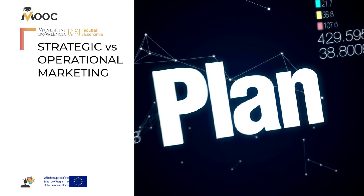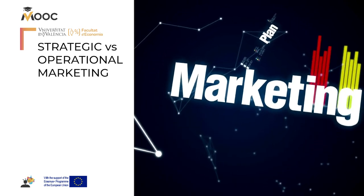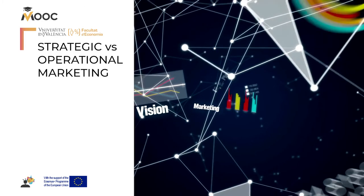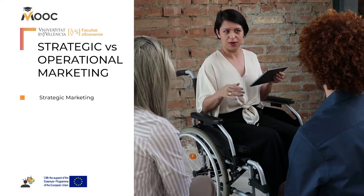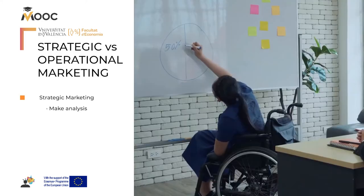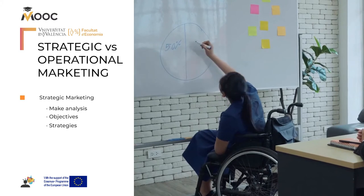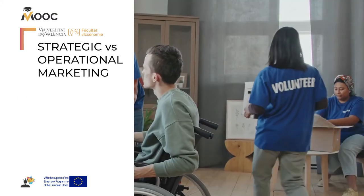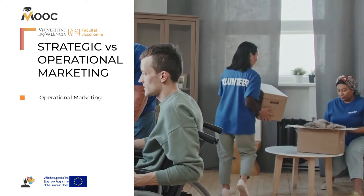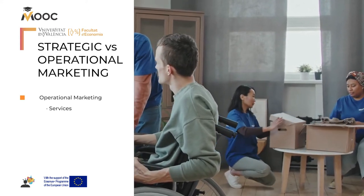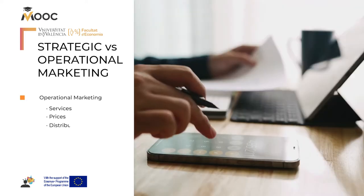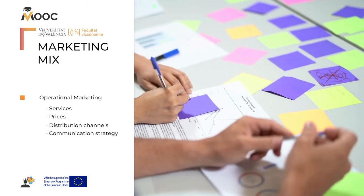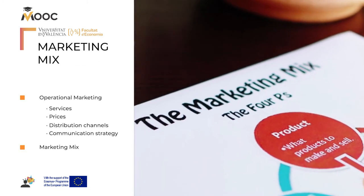However, before acting, we need to think. Because of this, we differentiate between strategic and operational marketing. Strategic marketing stresses the need to make an analysis, to formulate your objectives and strategies, and to define your target or audience. And basically, the operational marketing covers the proposal of diverse actions related to your services, prices, distribution channels, or your communication strategy. All that together is called marketing mix.